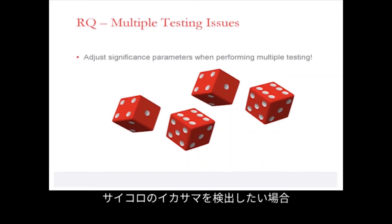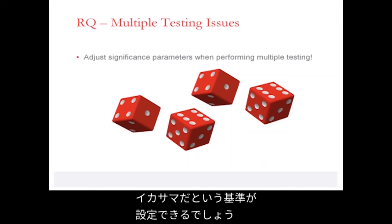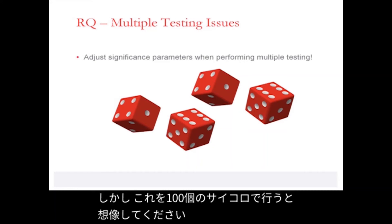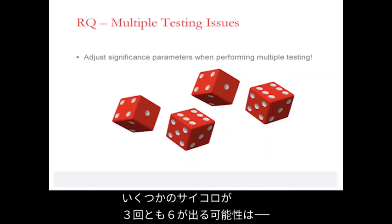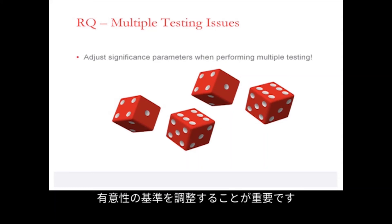An example of how significance criteria need to be adjusted is illustrated by the following. Suppose we want to detect whether a given dice is crooked. We define a test involving rolling the dice three times, and the criteria that if it comes up with sixes all three times, it is crooked. However, if the test is applied to 100 dice, chances are overwhelming that some true dice will come up with sixes all three rolls purely by chance. This is the problem of multiple testing, and it is very important to be aware of it and adjust significance criteria accordingly.